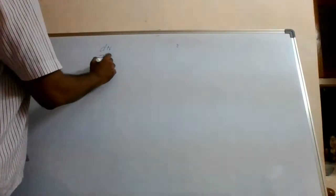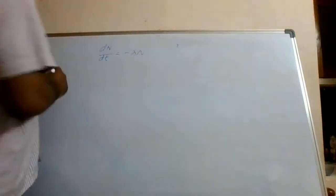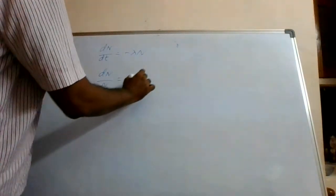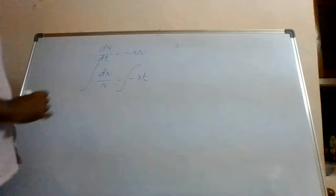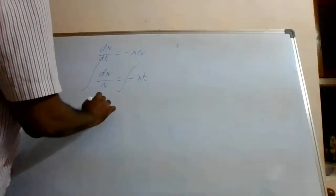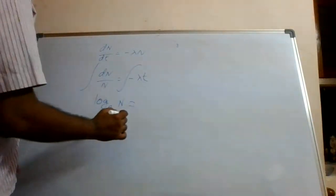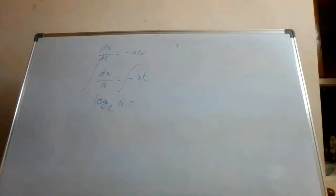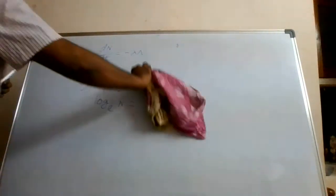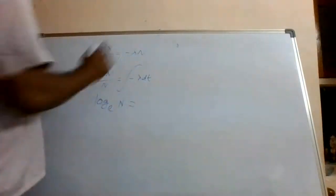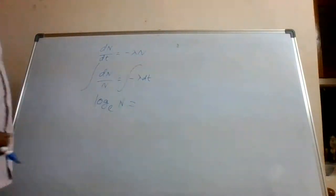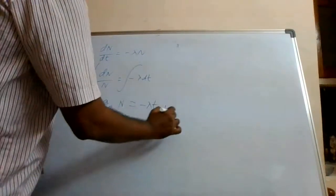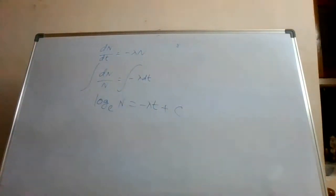So dN/dt = −λN. We can rearrange this as dN/N = −λ dt. Integrating both sides gives ln N = −λt + C, where C is the constant of integration.